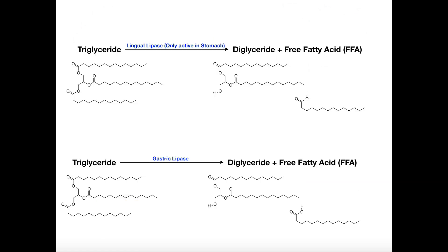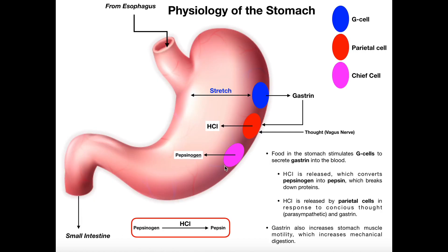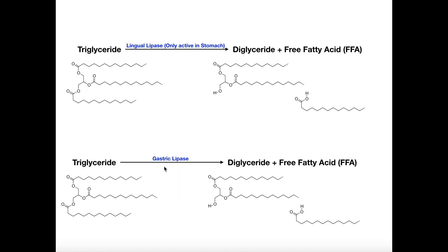There is also lipid digestion, and that is through the activities of lingual lipase and gastric lipase. Gastric lipase is an enzyme that's secreted by the chief cells of the stomach, so the chief cells secrete both pepsinogen and gastric lipase. Let's take a look at what gastric lipase actually does.